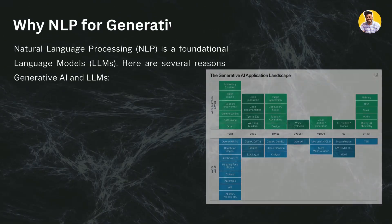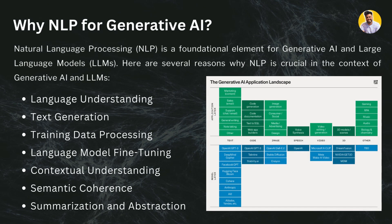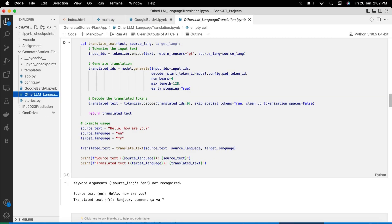Why NLP for generative AI? Natural language processing is a foundational element of generative AI and large language models. Language understanding is one key reason: NLP provides the foundational tools and techniques for machines to understand human language, which is essential for generative AI to understand human context and generate relevant responses. As shown in this screenshot, a language translation model translates English into French.